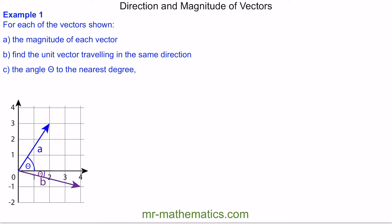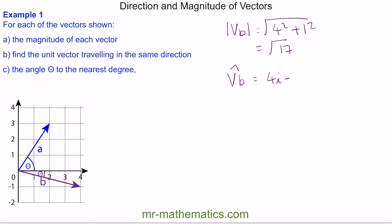Welcome back. The magnitude of vector B — we'll write it in i and j form — is 4i minus j. So the magnitude will be the square root of 4 squared plus 1 squared, which is 16 plus 1, giving root 17. A unit vector will be (4i − j) over root 17. We need to rationalize this denominator by multiplying both by root 17, giving root 17 times (4i − j) over 17. This is our unit vector.